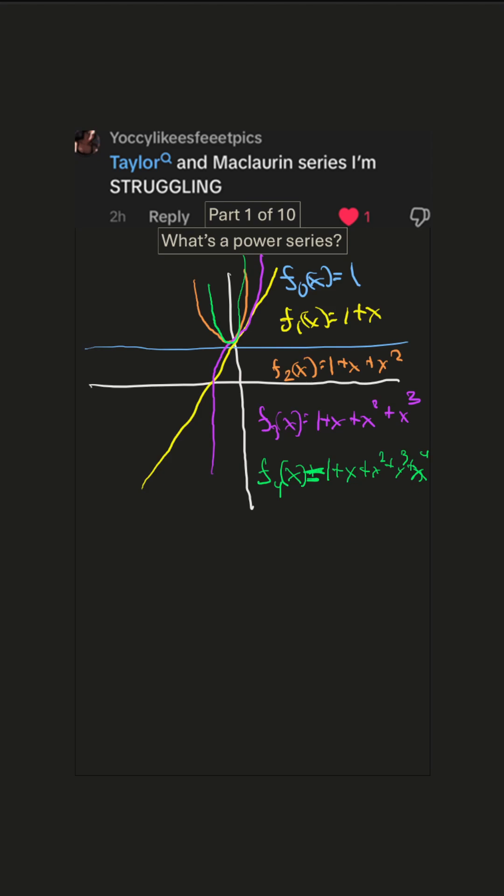So we're approximating the features of a more complicated function just by using a polynomial. Now the polynomial that we were writing out here is this one. It just goes up to infinity. Now we can call that s.